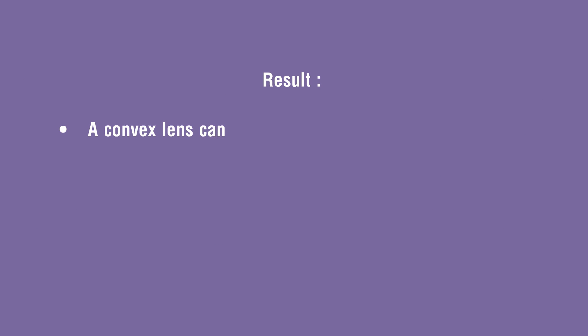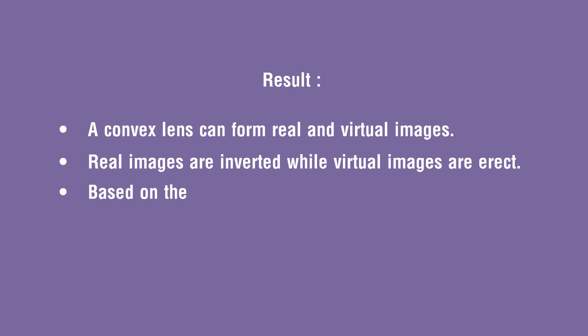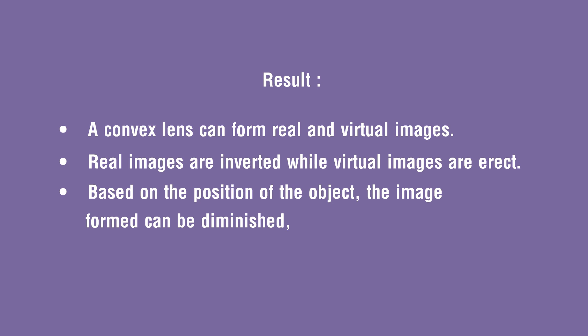Results: A convex lens can form both real and virtual images. Real images are inverted while virtual images are erect. Based on the position of the object, the image formed can be diminished, enlarged, or of the same size.